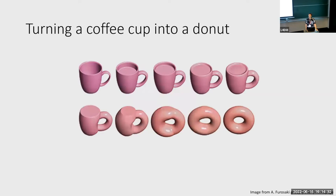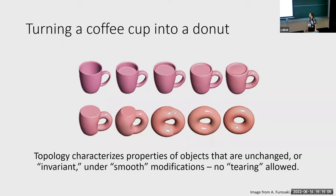Instead, what we want to do is consider a process more like this. You start with the coffee cup, and then you start squishing, stretching, and deforming it in different ways — bringing up the bottom, smoothing it out, deforming it further and further until we get to a donut. The difference between these two processes is that we want to consider smooth modifications. I mean continuous, but I'm going to keep saying smooth for the rest of this talk. The field of topology characterizes properties of objects that are unchanged or invariant under smooth modifications — no tearing of anything allowed.